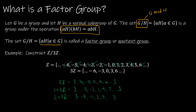We can see that we've now used up all of the elements in Z — we've partitioned Z into three different cosets. So Z mod 3Z is a factor group or quotient group consisting of 0+3Z, 1+3Z, and 2+3Z. Essentially, this group has three elements.